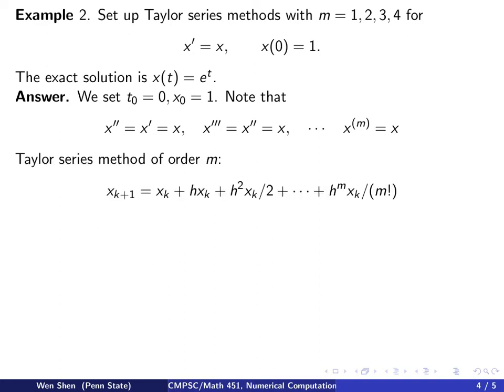Then Taylor series method of order M for this problem becomes simple, because all the derivatives will be just xk. So I will have xk plus 1 equals to xk plus h times x prime, which is exactly xk, plus h square half times x double prime, which is just xk. You can just replace all the derivatives of x with xk, and you add up all the way to h to the power M times xk, that's x to the Mth derivative, divided by M factorial.